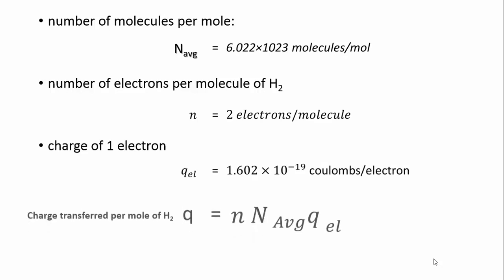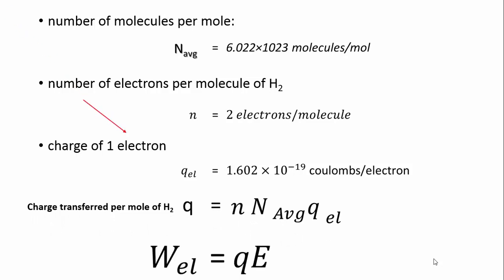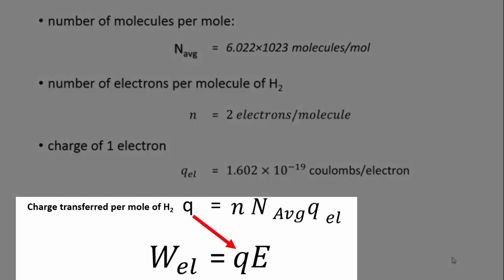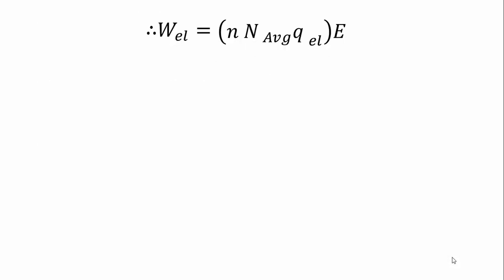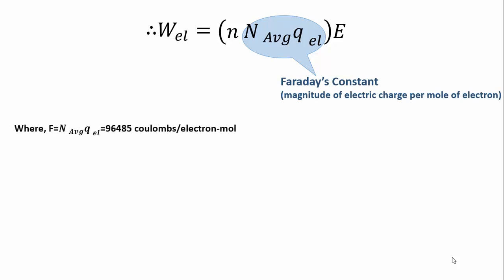Product of these three gives us the charge transferred per mole of hydrogen, and this is the Q that we need. Substituting the value of Q in this equation, we get this expression for electrical work. As the product of these two parameters is a most familiar number called Faraday's constant, the expression can be simplified as follows.